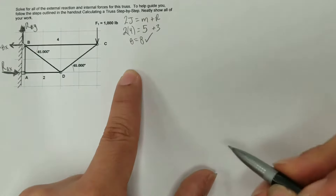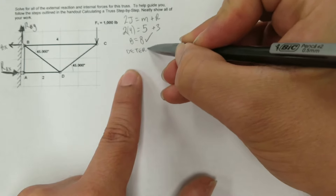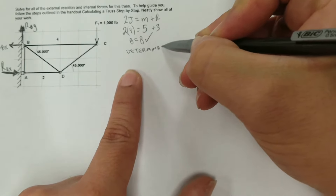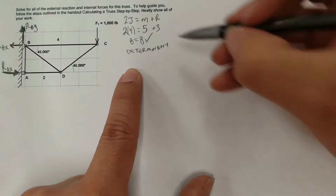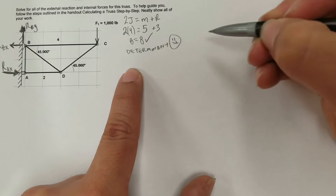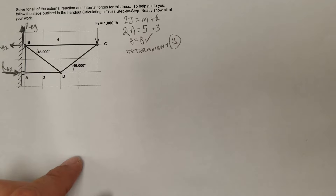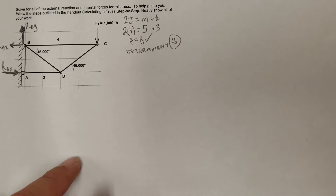We get 8 = 8, so this truss is statically determinate and we can go ahead and solve it. After confirming determinacy, the next step is to use the sum of forces in the x or y direction, or the sum of moments equal to zero.